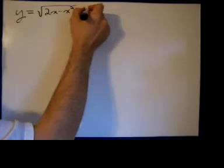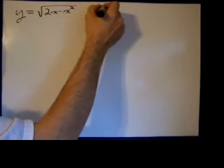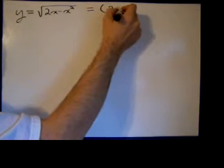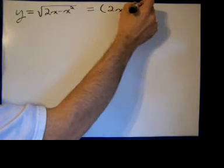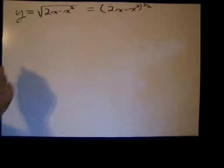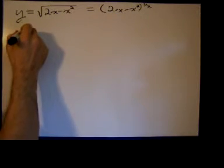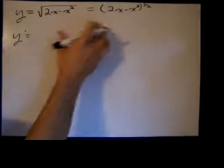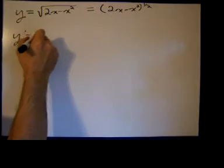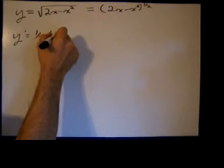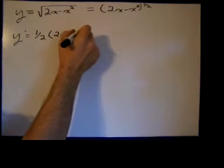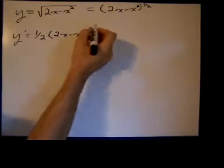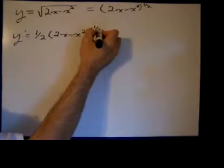It may help if you rewrite the square root as power of one-half on the function. It just makes things easier. So y prime is the derivative of what we call the outside function, which is something to the one-half, so power down in front, write that something, reduce one-half by one, that's negative one-half.